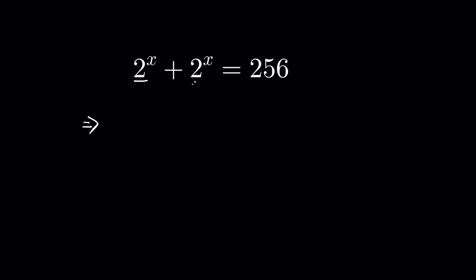Here 2 to the power x is common, so we can take it out. 2 to the power x divided by 2 to the power x is equal to 1, plus 2 to the power x divided by 2 to the power x, 1, is equal to 256.